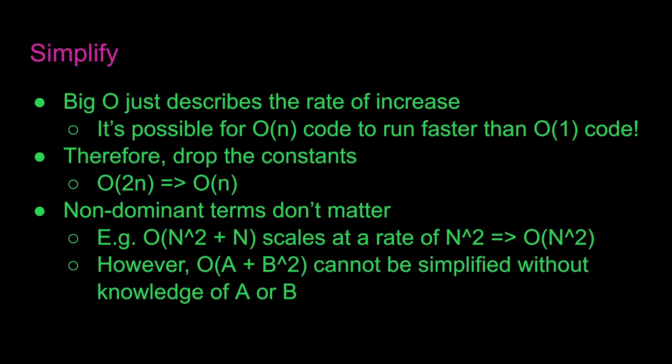However, O(a + b²) cannot be simplified without knowledge of a or b, and this is because you don't know if a or b is the one that makes the algorithm scale worse.